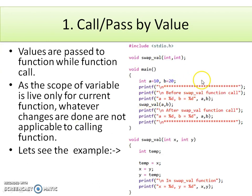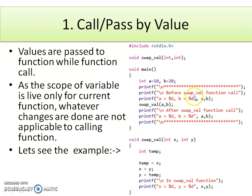Here, an example is given where a 'swapVal' function is declared with two arguments and a void return type. In the main function, we declare two variables a and b — a is initialized to 10, b to 20. We display the values of a and b before the swapVal call, then call the function passing the values of a and b. In the function definition, these values are collected in x and y — where a and b are actual arguments and x and y are formal arguments.